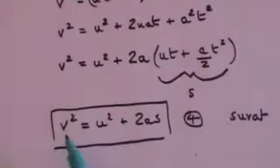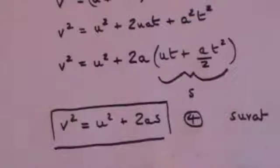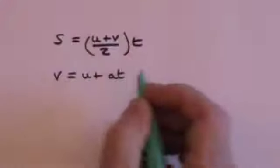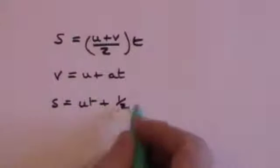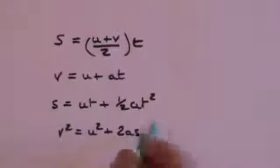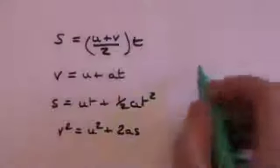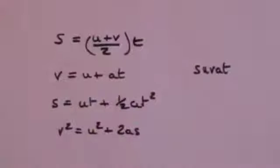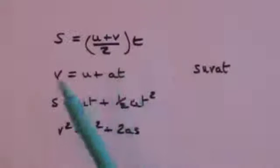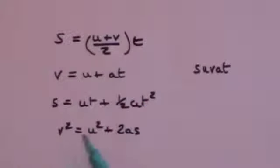So having derived all four, let's remind ourselves of the SUVAT equations. The first is S equals (U plus V) over 2 times T. The second is V equals U plus AT. The third is S equals UT plus one-half AT squared. The fourth is V squared equals U squared plus 2AS. In each case, four of the five values S, U, V, A, T appear. The thing missing from equation 1 is acceleration; from equation 2 is distance; from equation 3 is final velocity; and from equation 4 is time. Initial velocity U appears in all of them.